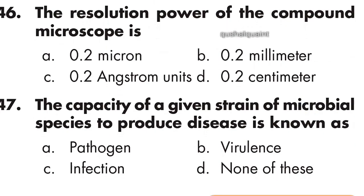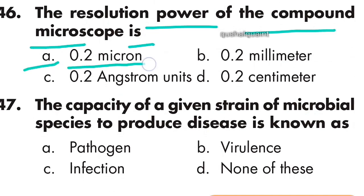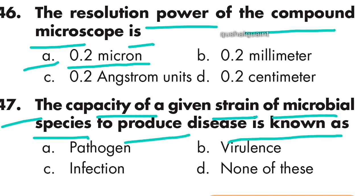Question number 46: The resolving power of a compound microscope is 0.2 microns. Option A is right — 0.2 microns. Question number 47: The capacity of a given strain of a microbial species to produce disease is known as virulence. Option B is right — virulence.